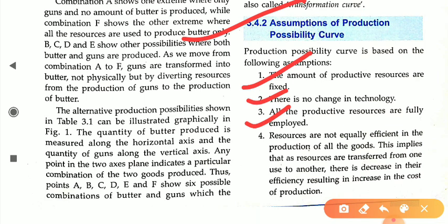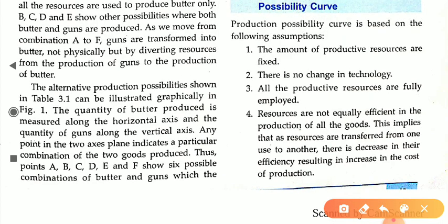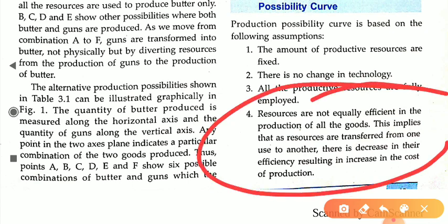Third assumption: all productive resources are fully employed. Whatever resources you have, all of them are fully utilized — there are no idle resources. If you have five laborers and four units of capital, you use all five laborers and all four units of capital. Fourth assumption: resources are not equally efficient in the production of all goods — some are more efficient and some are less efficient.